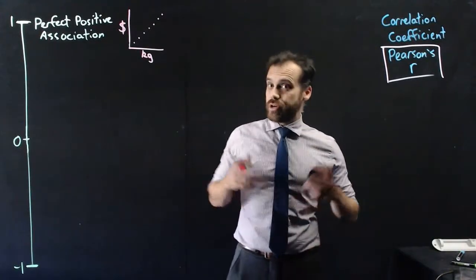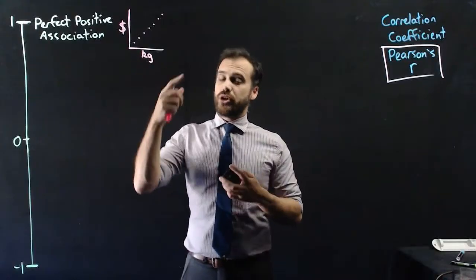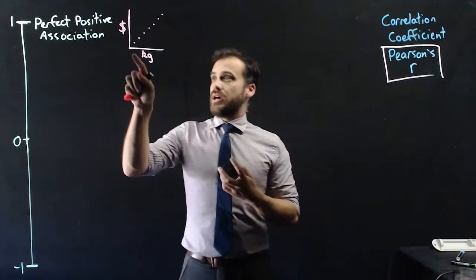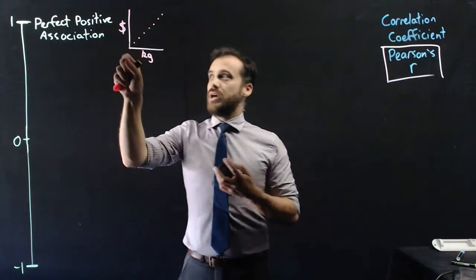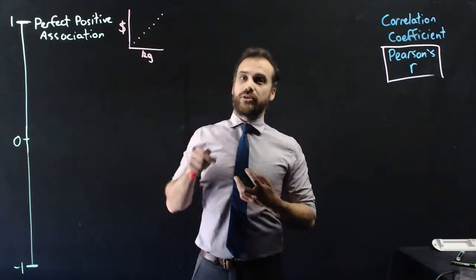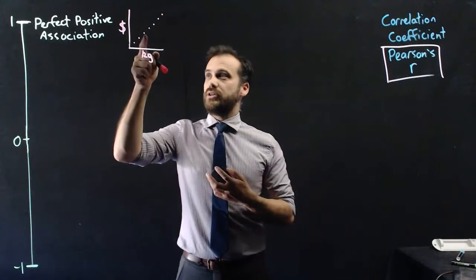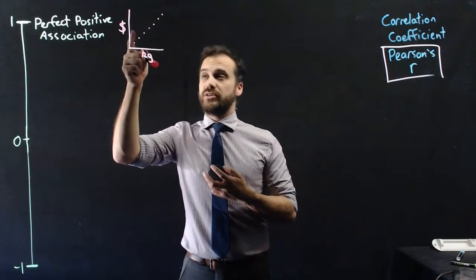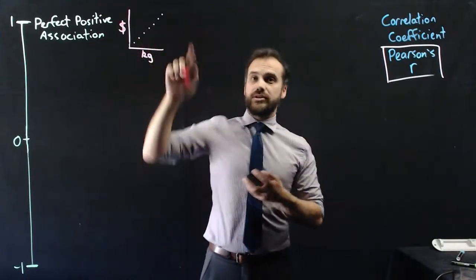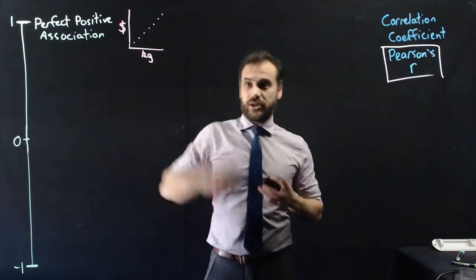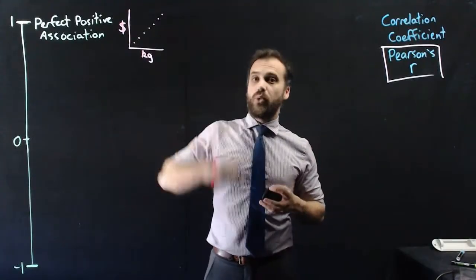A little known fact, I used to be a fruiter. I used to sell fruit, and if you go to the shop and buy fruit, say bananas, however many kilos you buy and however much money it costs you, that's a perfect positive correlation. If you buy three kilos of bananas it'll cost you say six dollars. If you buy five kilos of bananas it will cost you ten dollars. It's a straight line. Perfect positive association, one.